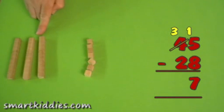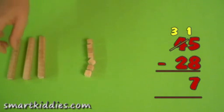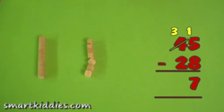Now the tens column. I have 3 tens. Take 2 away. 1, 2. That leaves us with 1 ten.